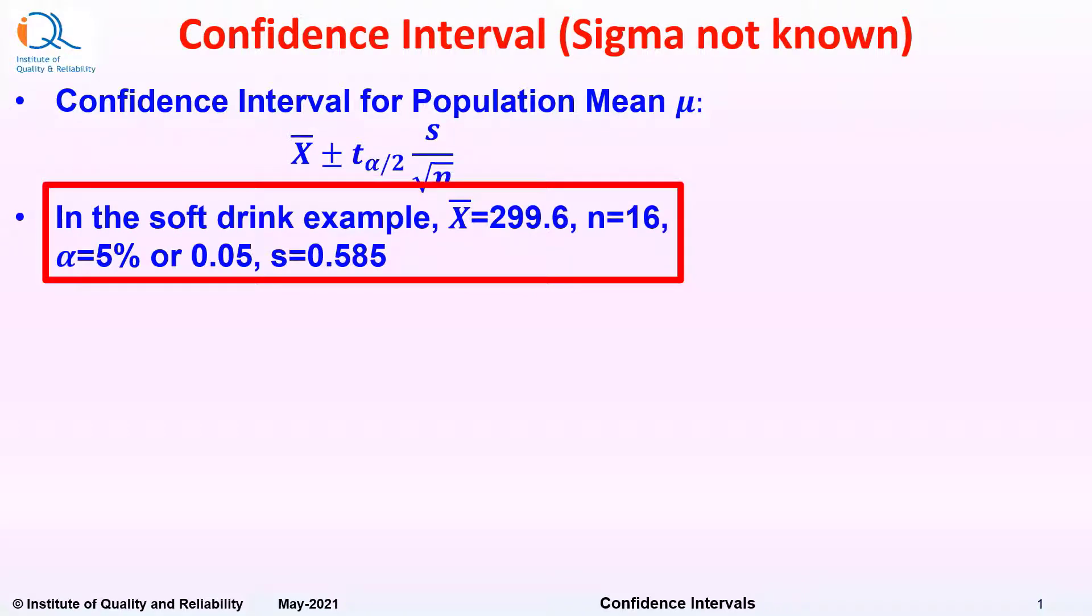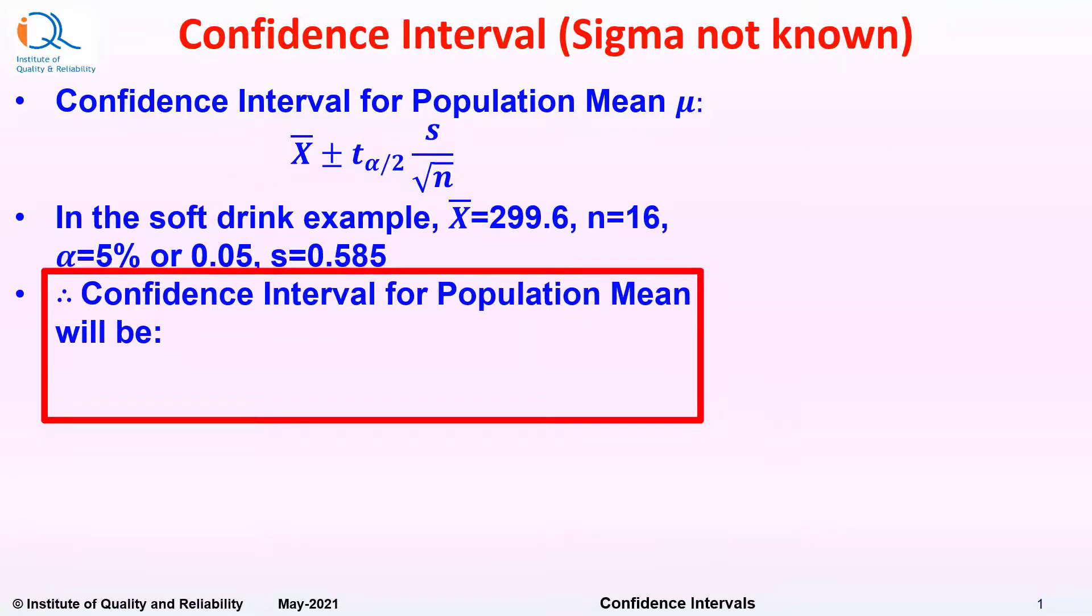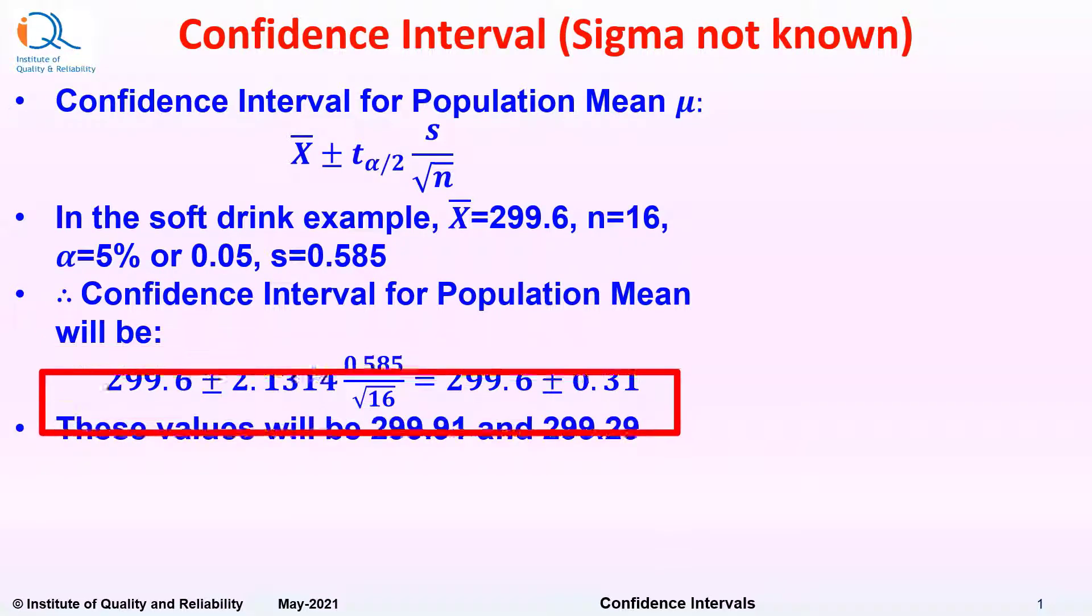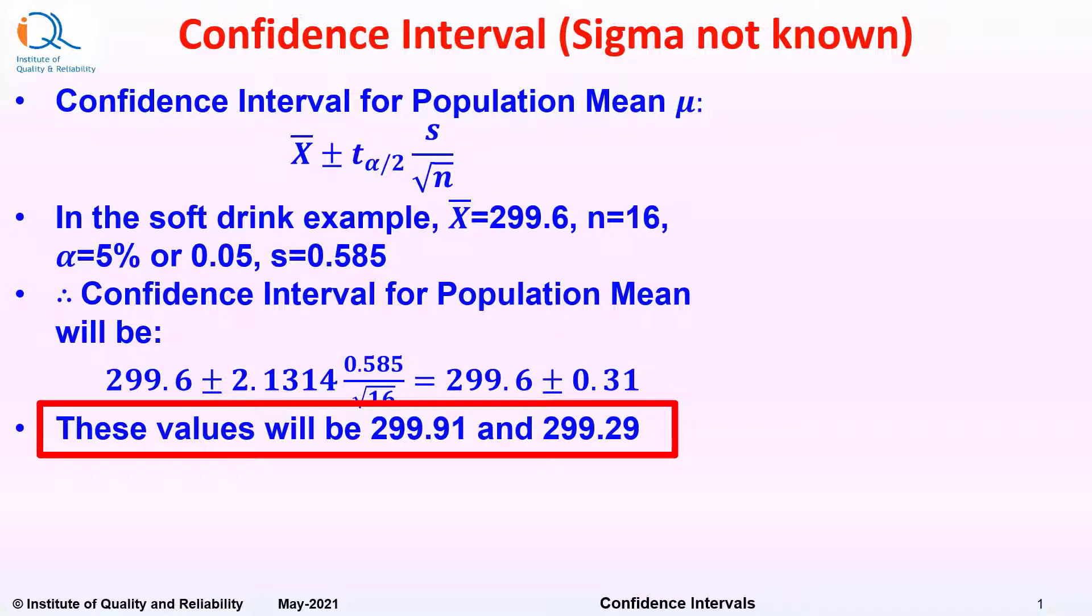In the soft drink example, x̄ = 299.6, sample size n = 16, α = 5% and s = 0.585. Therefore, confidence interval for population mean will be given by 299.6 ± 2.1314 × 0.585/√16, and it works out to be 299.91 upper value and 299.29 lower value.